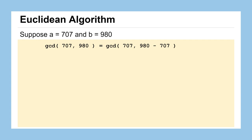We subtract the smaller from the bigger, which gets us to our result much faster. So now our problem is to find the greatest common divisor of 707 and 273. Smaller numbers are easier and faster to factor.